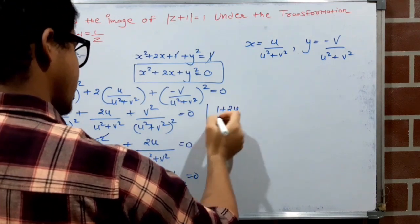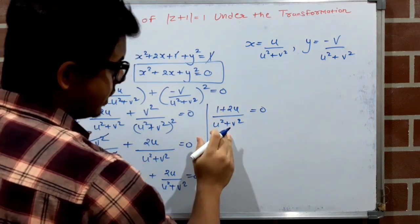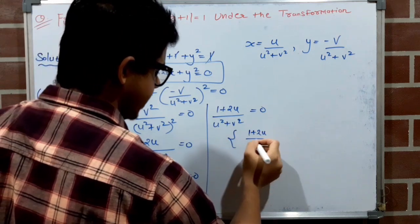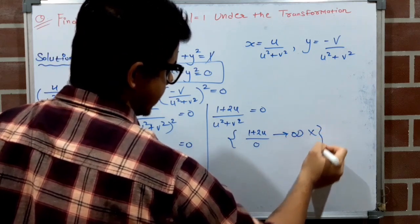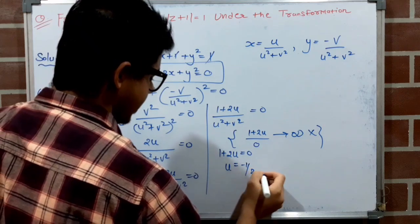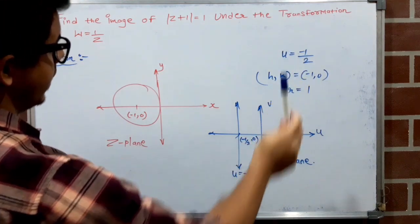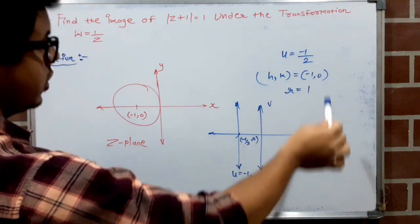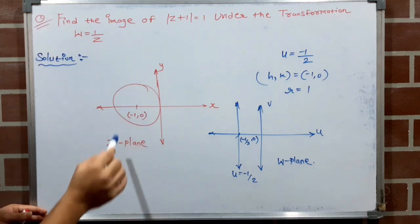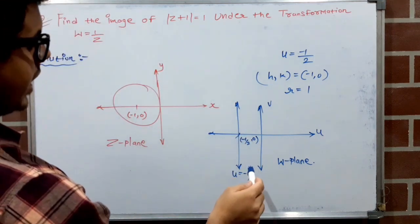Since the denominator cannot be zero (that would make the term tend to infinity), the numerator must be zero: 1+2u=0, giving u = −1/2. So this is the equation of a vertical line u = −1/2 in the w-plane.